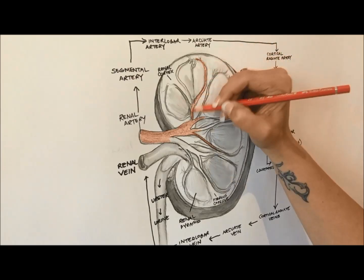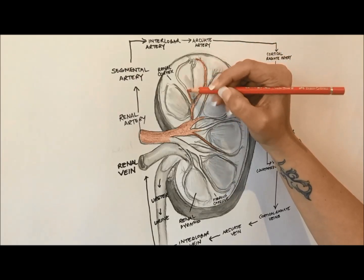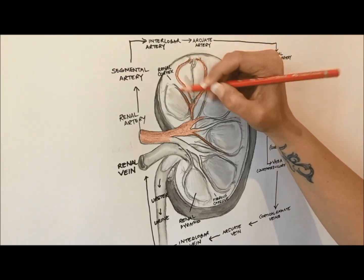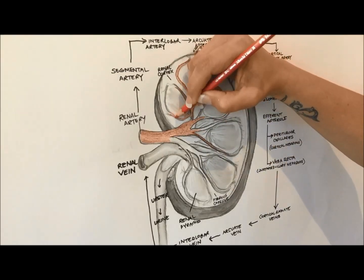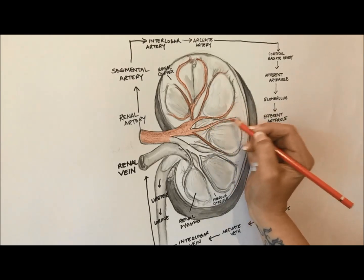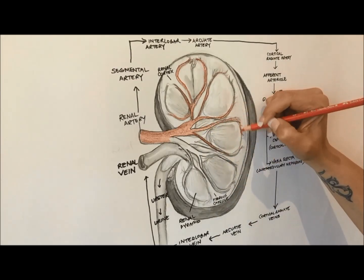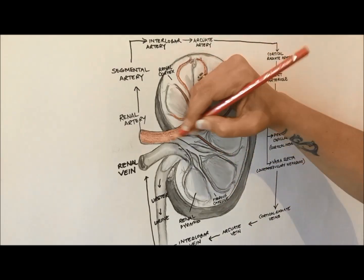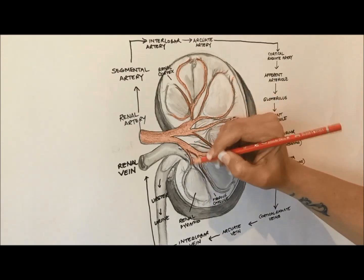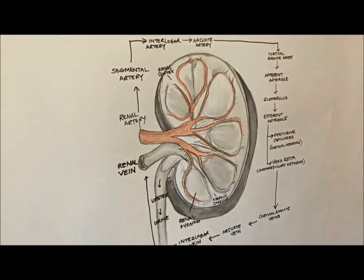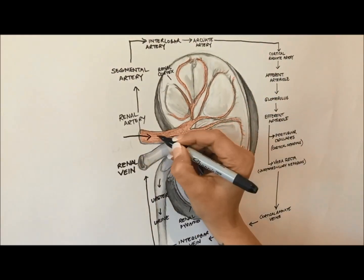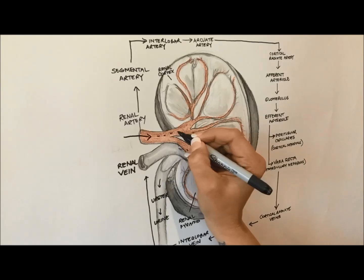They then follow the outer curvature of the renal pyramids, where they are known as the arcuate arteries. Dividing further, they produce a series of cortical radiate arteries, also known as interlobular arteries, that radiate outwards, entering the renal cortex, giving off branches called afferent arterioles.